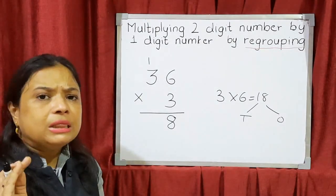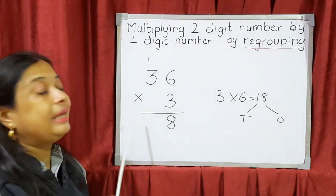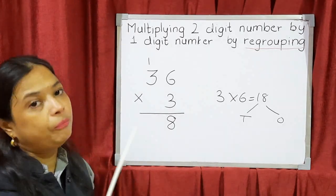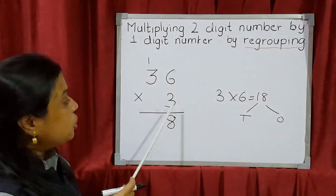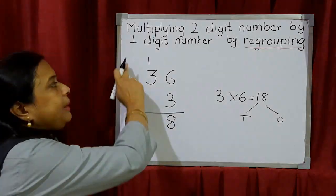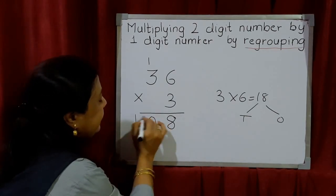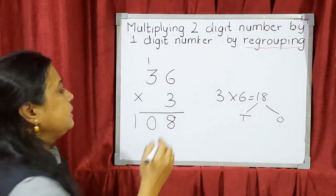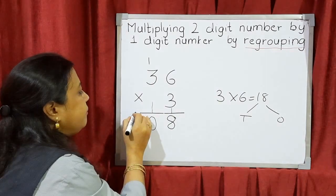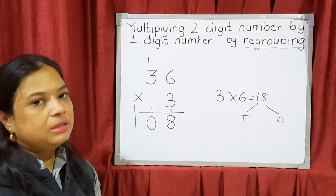The important thing to remember is that when we multiply the next digit, whatever carry over there is, we are going to add it — not multiply it. So 3 threes are 9. 9 plus 1 carry is 10. The answer is 10. So 8 is in the ones column, 0 is in the tens column, and 1 is in the hundreds column. You must be very careful while writing the digits in their proper columns.